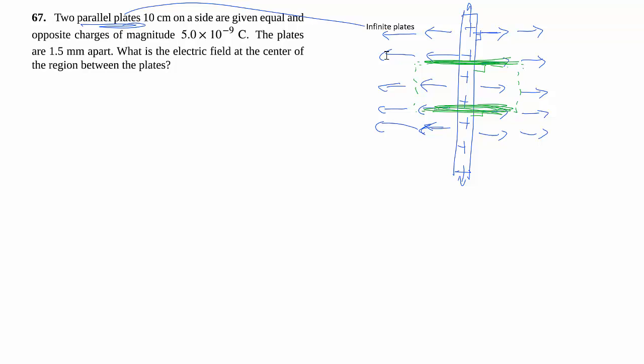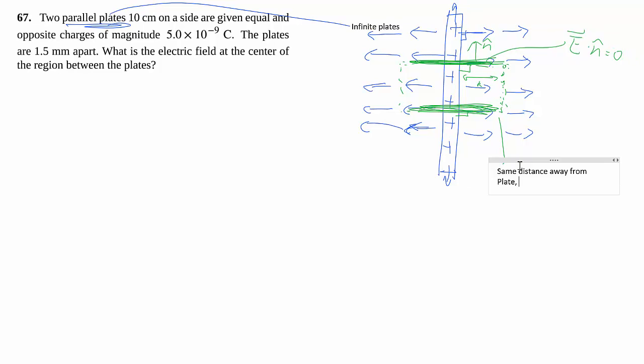These surfaces all the way around basically give us a flux of zero because the electric field is parallel to the surface or perpendicular to my normal there. And then we have some kind of end cap that has constant distance away from the plate. And because it has the same distance away from the plate, the symmetry dictates that it should have the same magnitude of electric field.